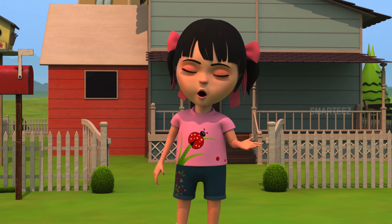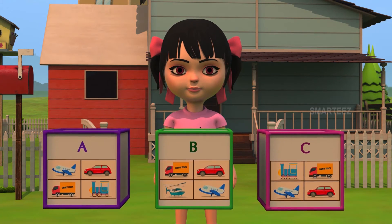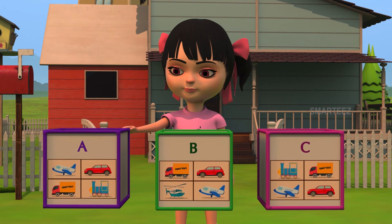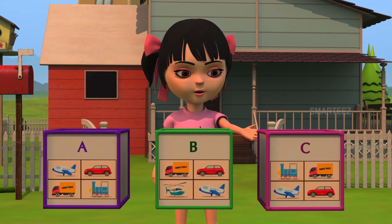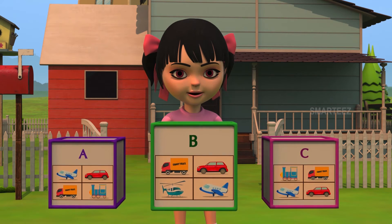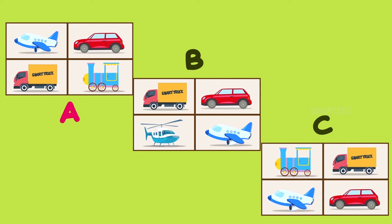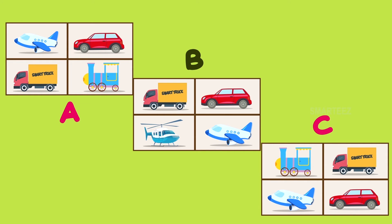Let's see another one. Take a look at the three sets of pictures. Can you tell which one among the three has a different toy? Yes, this is the box that has a different toy not found in the other two. There were four toys in all the pictures. Pictures A and C had the same toys — a toy airplane, a toy car, a toy truck and a toy train engine — even though they were not in the same order. But picture B had a different toy, namely the helicopter. So that's the picture that's different.